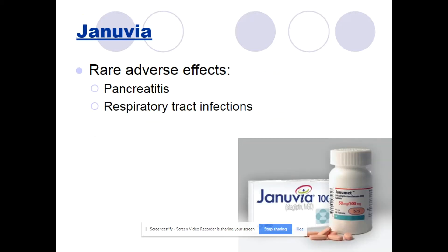Januvia, also called sitagliptin, is given 100 mg daily. Rare adverse reactions include acute pancreatitis — do not give to patients with a history of pancreatitis. It can also cause respiratory tract infections and can increase symptoms of heart failure. If the patient has a renal history, adjust the dose, usually breaking it down to 50 mg.